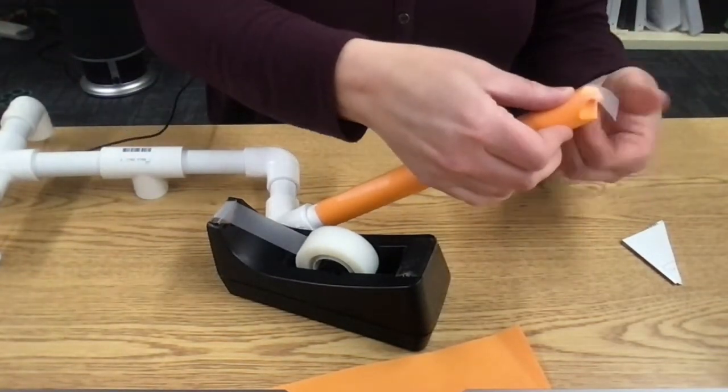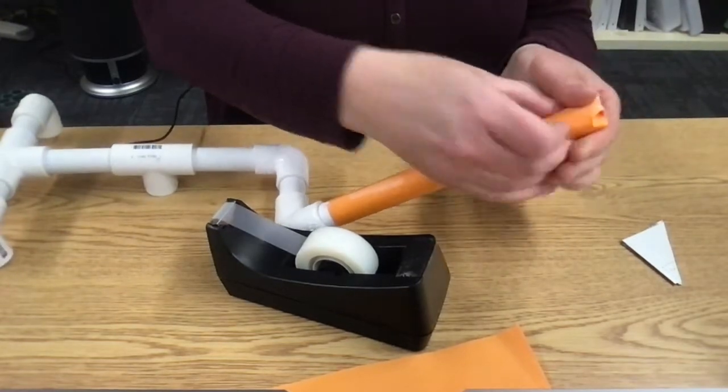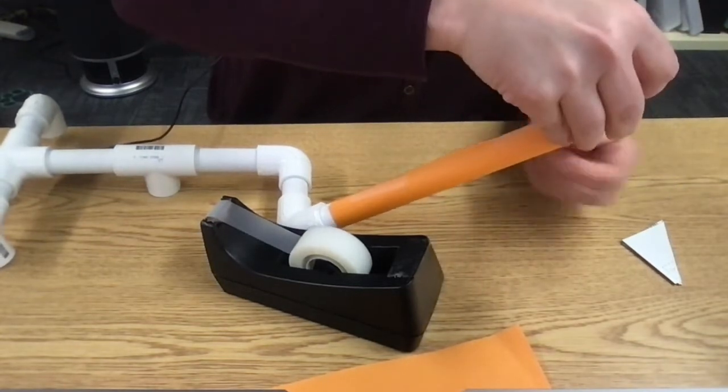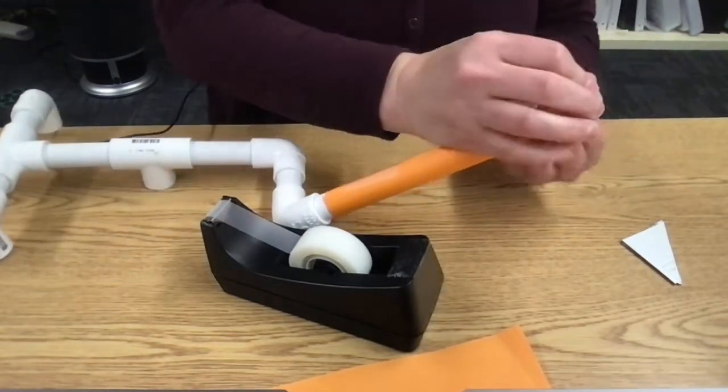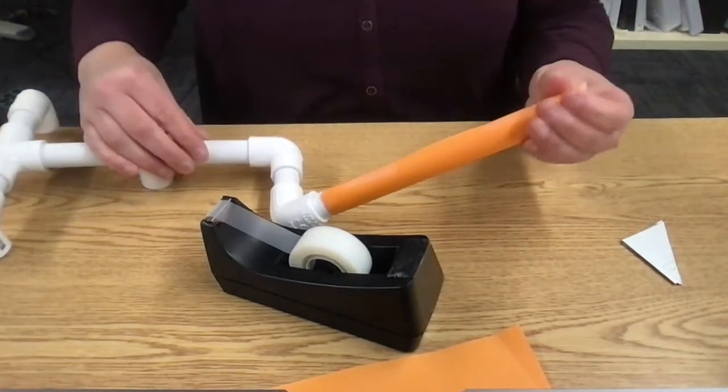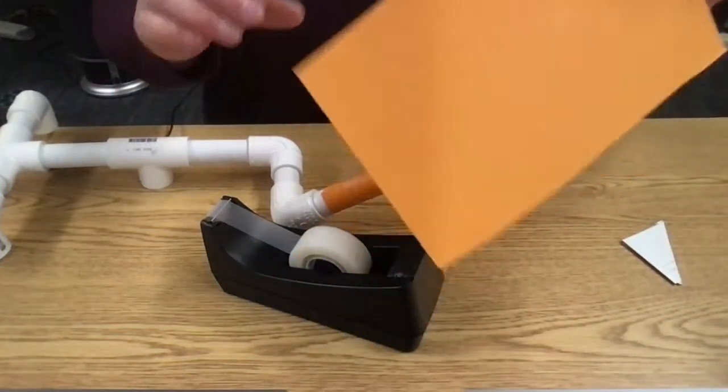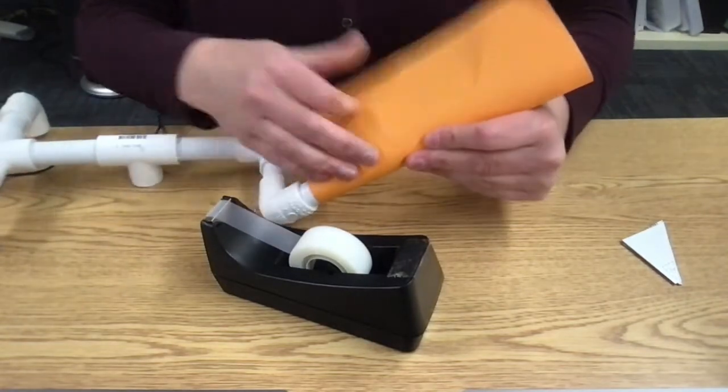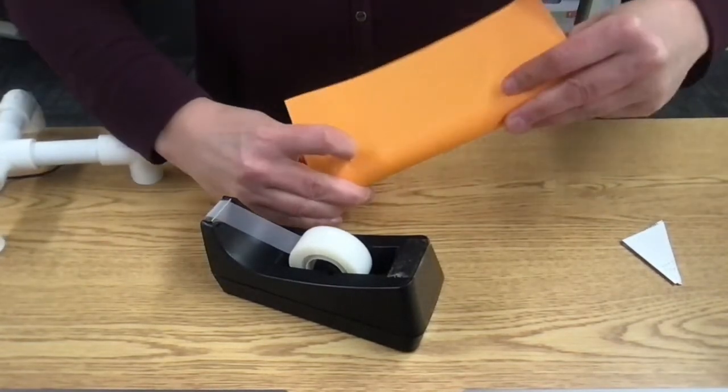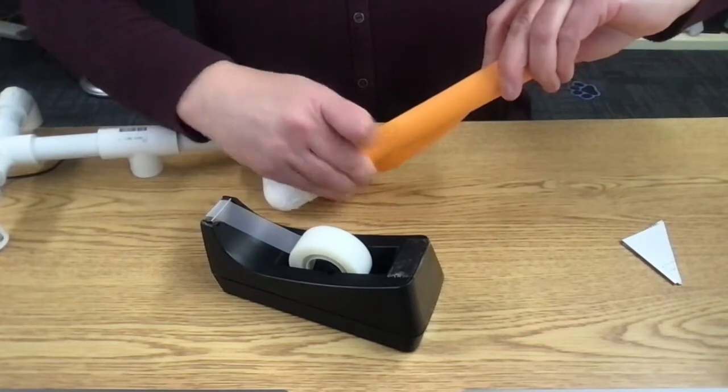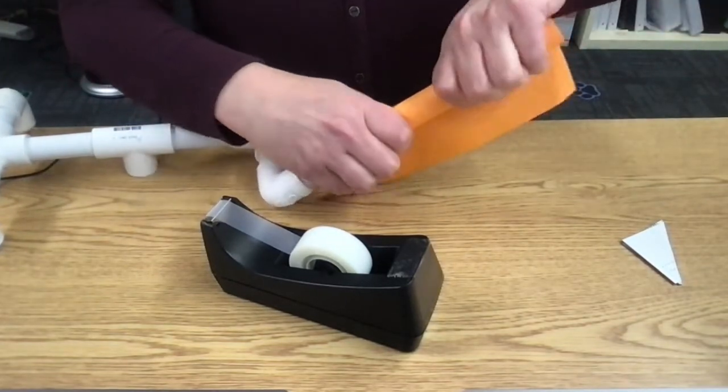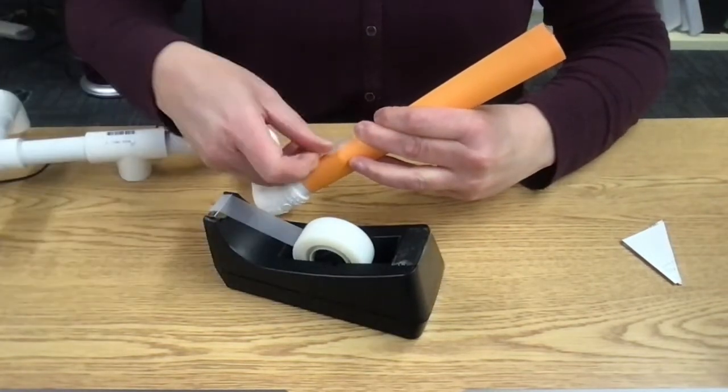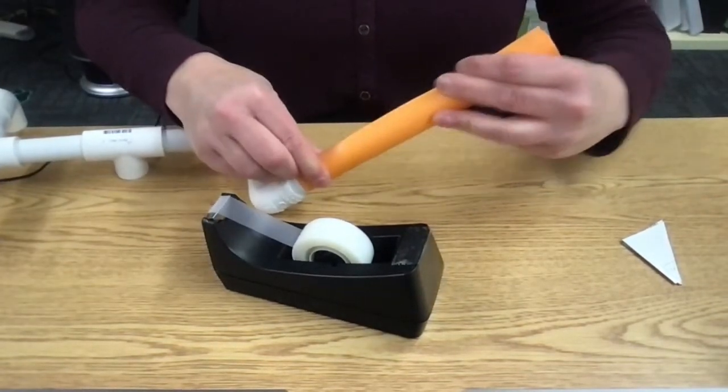Use a couple pieces of tape just to hold that in place. Just like that. Now we're going to take the second sheet of paper and we're going to do this again because this is actually going to be the rocket that we use. That first piece that I taped on was just a spacer to give us a little bit of space so that the rocket slides off this PVC pipe a little easier.